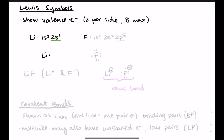For fluorine, the electron configuration is 1s2, 2s2, 2p5. The 2s2 and 2p5 — those seven electrons — are around my symbol for fluorine. So I have the letter F with seven electrons around it. Some of them are paired up, and one of them isn't, just because we end up with an odd number.